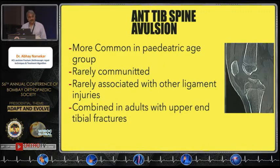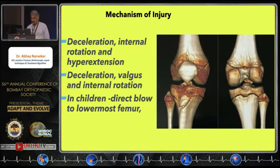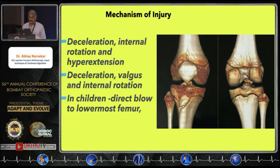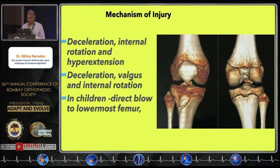However, in adults it seems to be combined more with upper anterior tibial fractures. The mechanism of injury is generally deceleration, internal rotation and hyperextension, or deceleration, valgus and internal rotation. However, in children it's basically a direct blow to the lowermost portion of the femur.